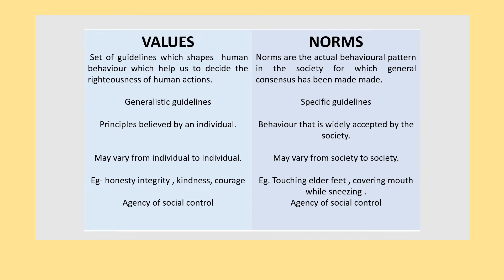Behavior that is widely accepted by society is referred to as norms. Values may vary from individual to individual and from society to society. Examples include honesty, integrity, kindness, courage. Values and norms act as agents of social control. Values and norms help maintain stability in society - for example, following honesty as a value, following religious values, believing in peaceful existence - these help maintain solidarity and stability within a society.